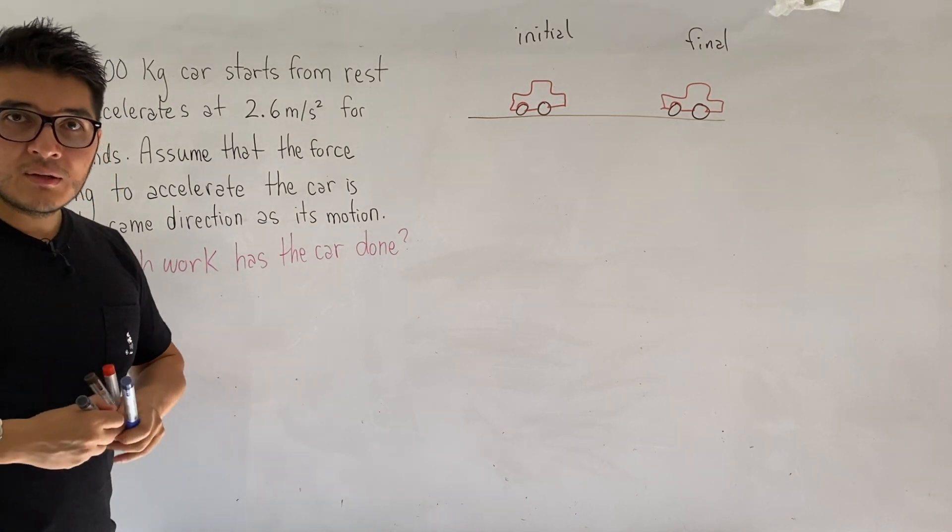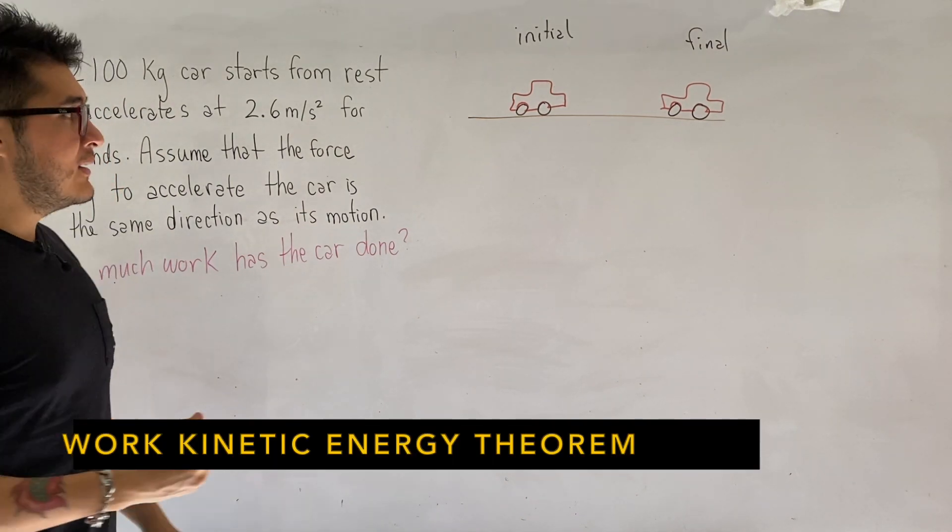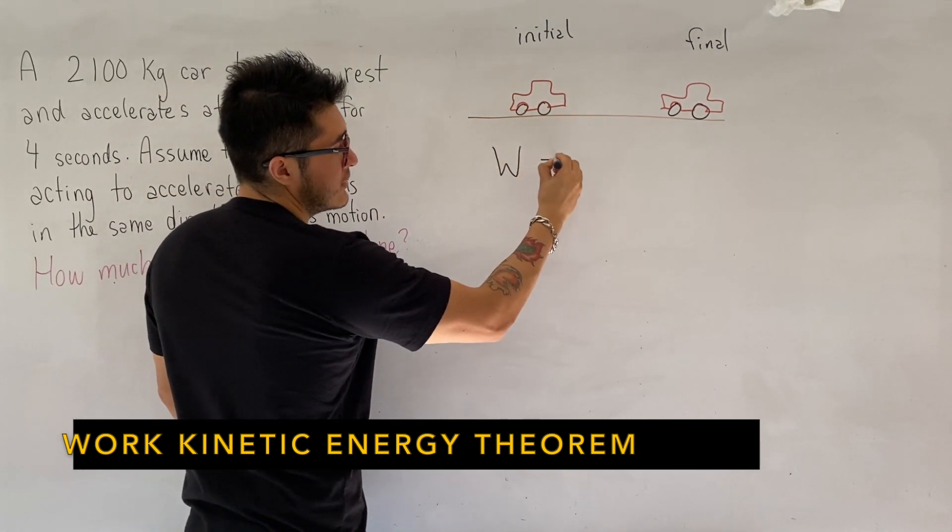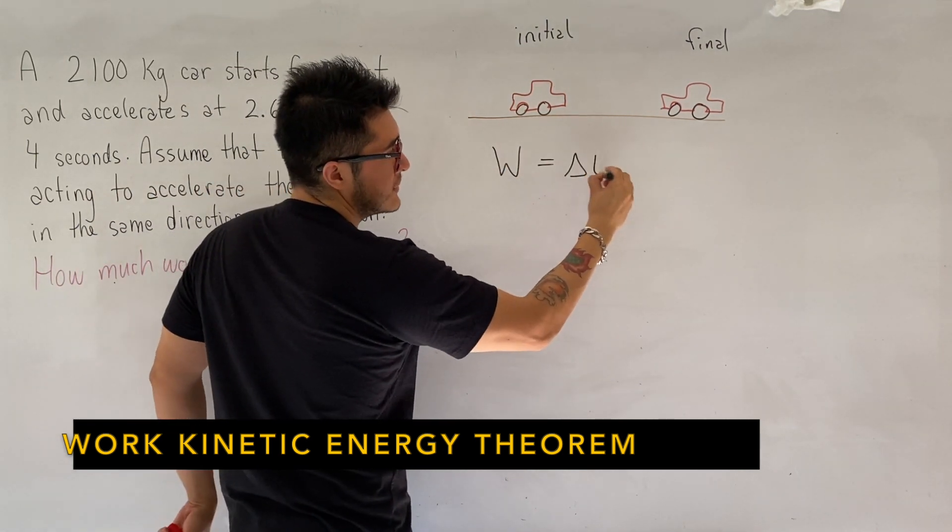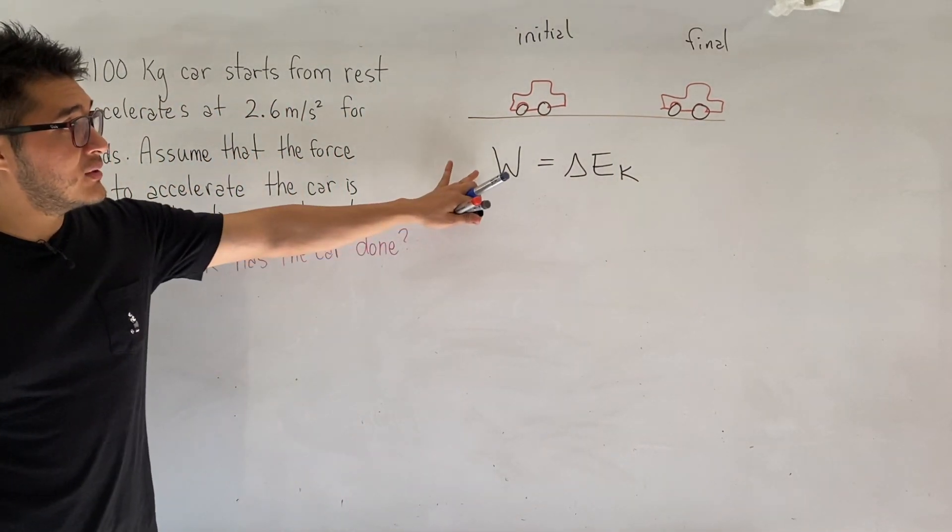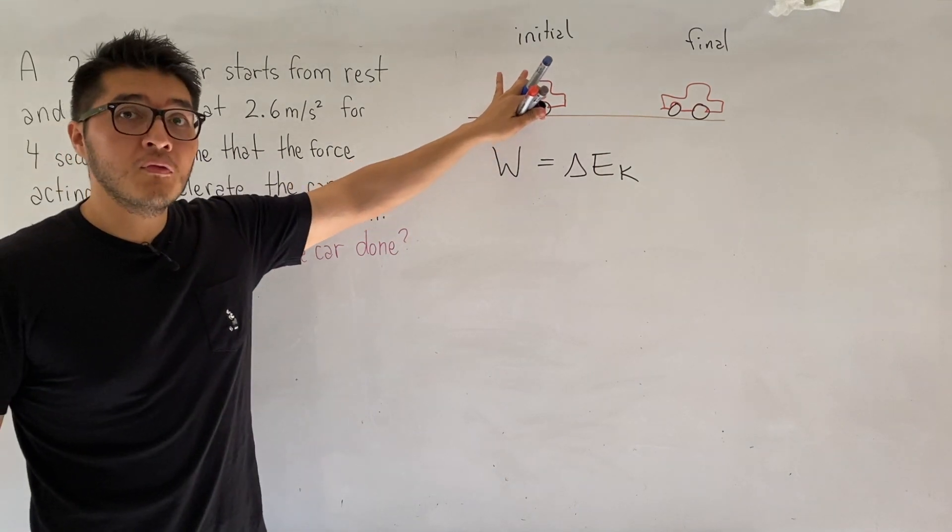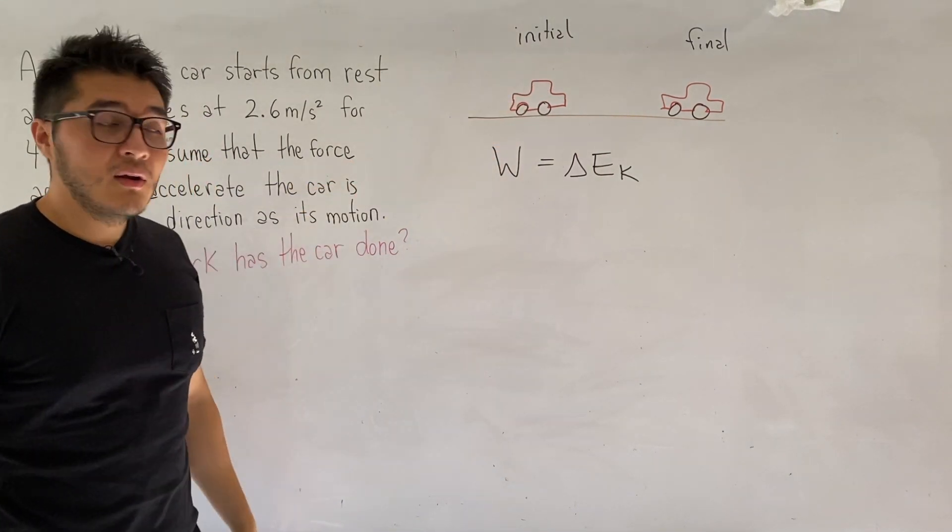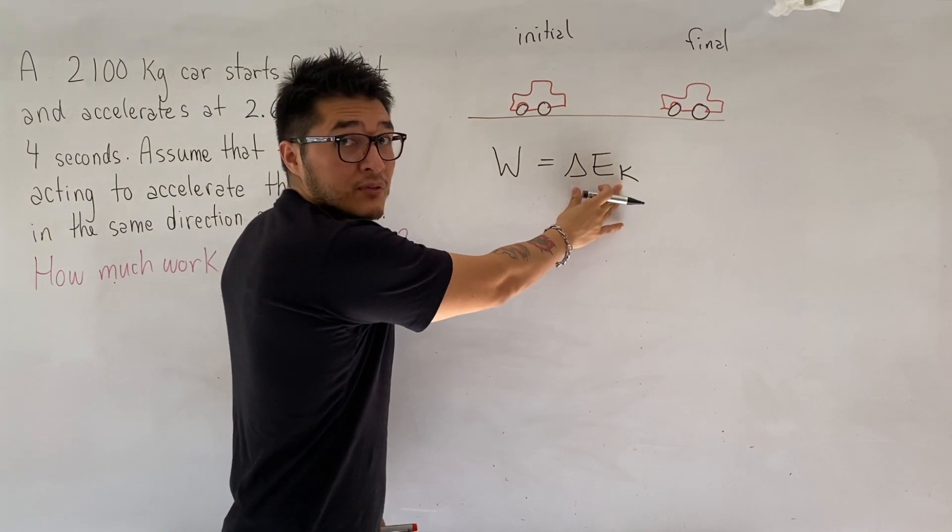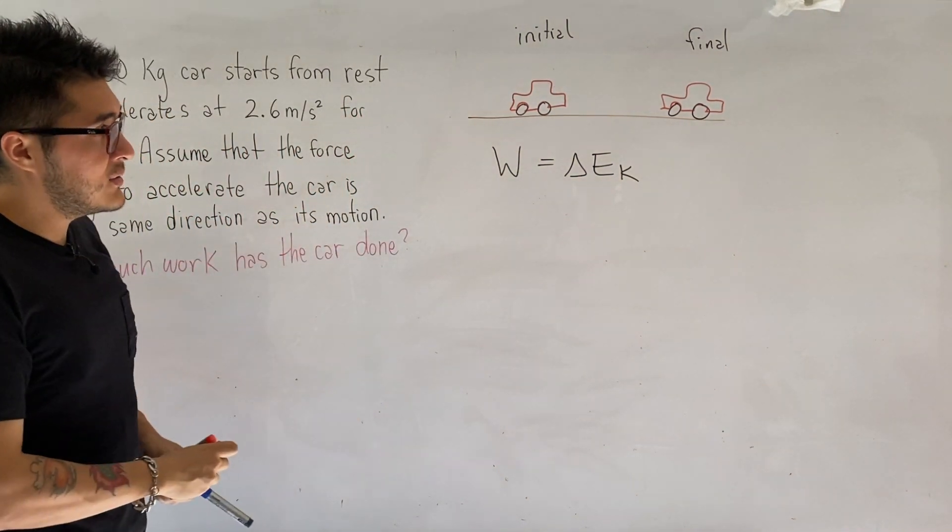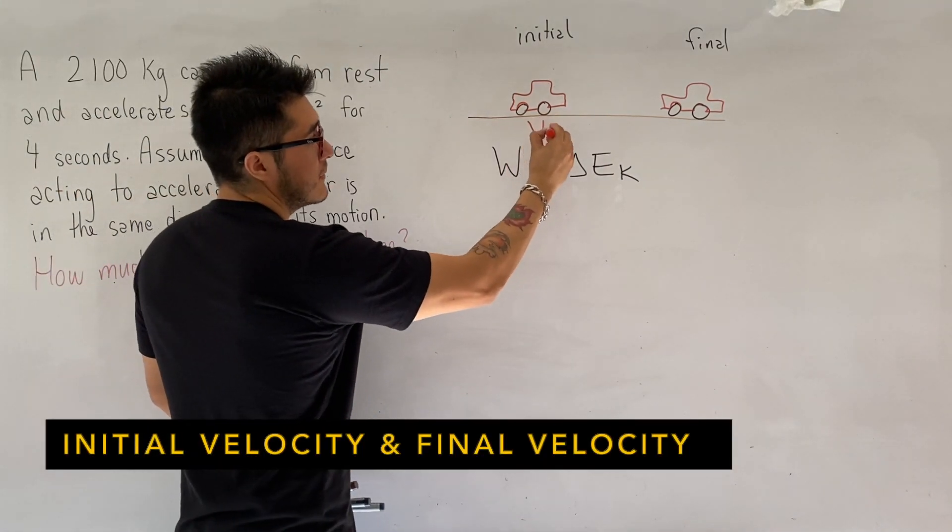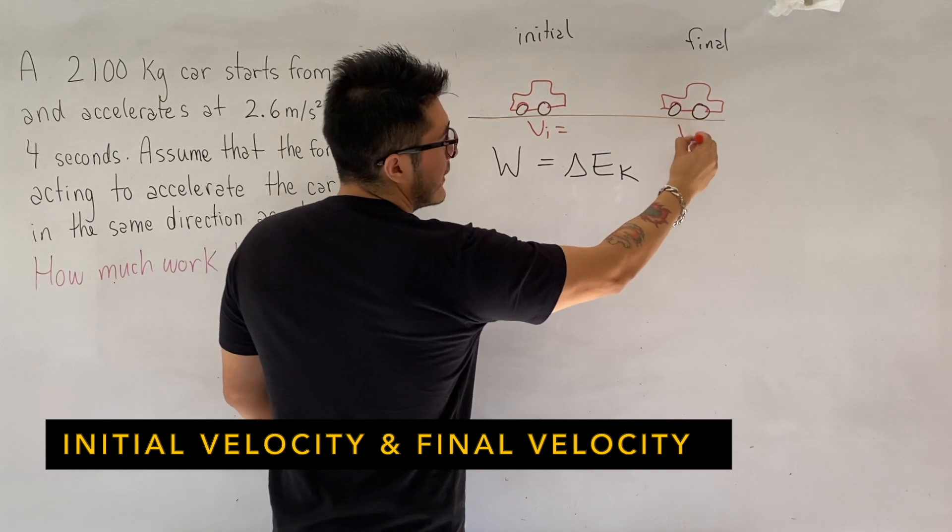So the main equation that we're going to work with is the work kinetic energy theorem, which is the work done by the net force is equal to the change in the object's kinetic energy. This formula is really helpful because we don't even need to know what are the forces acting on the car. All we really need to know is what is the change in energy, specifically kinetic energy, which depends on the initial velocity and the final velocity.